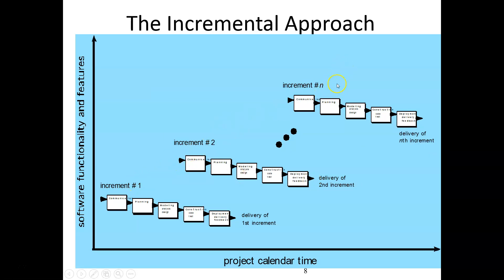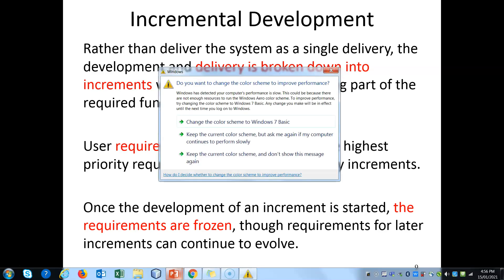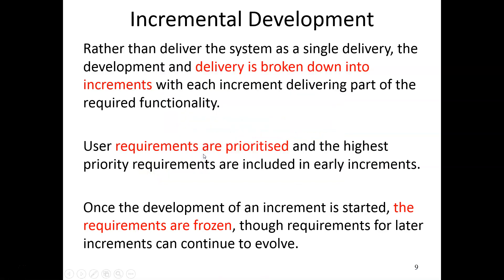What is the incremental approach? You can see increment one, increment two, and then a number of increments. In increment one you follow the steps and deliver the first increment; in increment two you follow the steps and deliver the second increment. In incremental development, you break down the software into increments, where each increment delivers part of the required functionality. You prioritize requirements and deliver the highest-priority ones in the early stage. Once development of an increment is started, the requirements are frozen — later increments can continue to evolve.